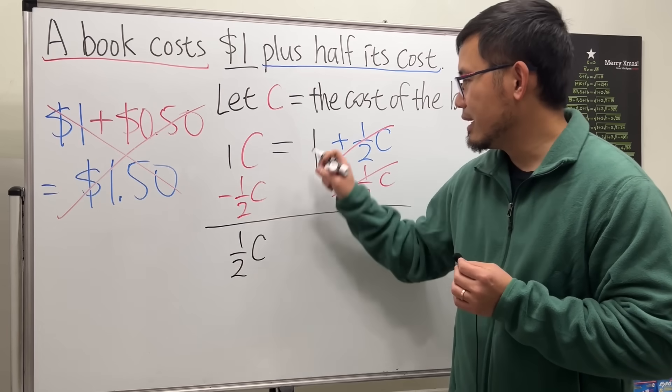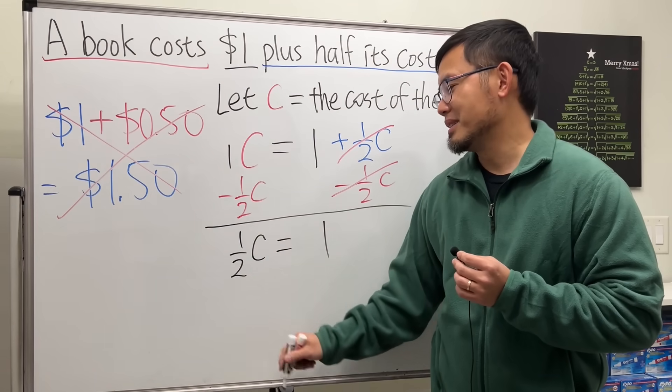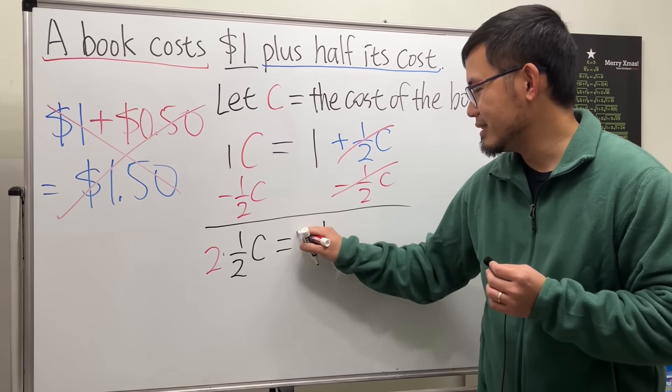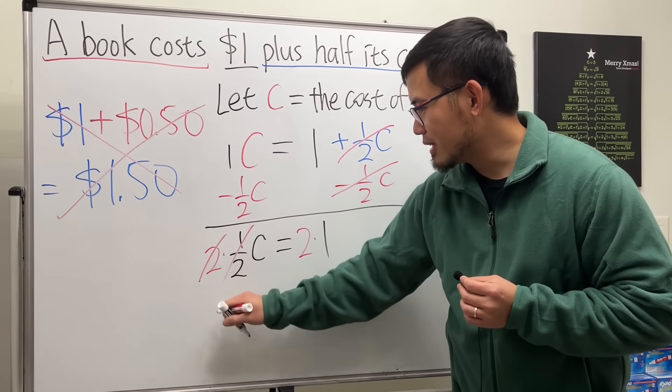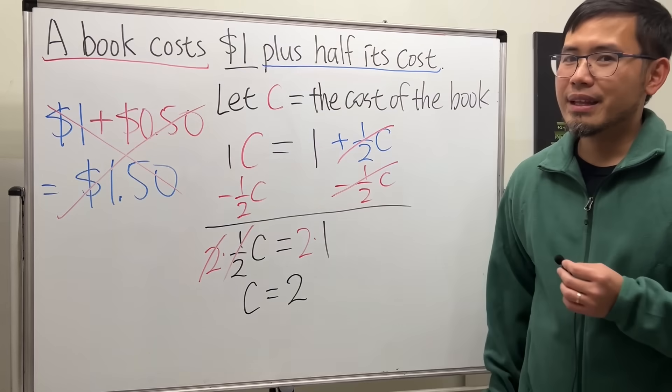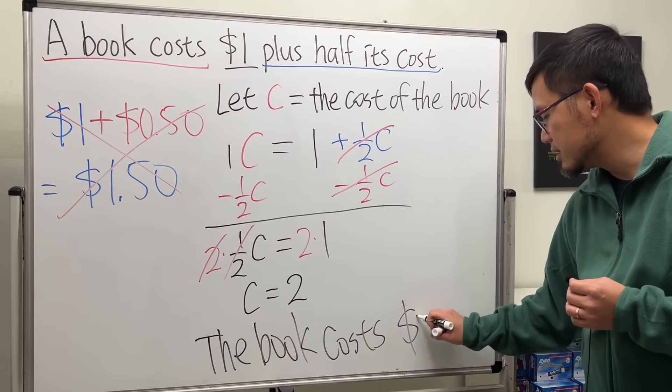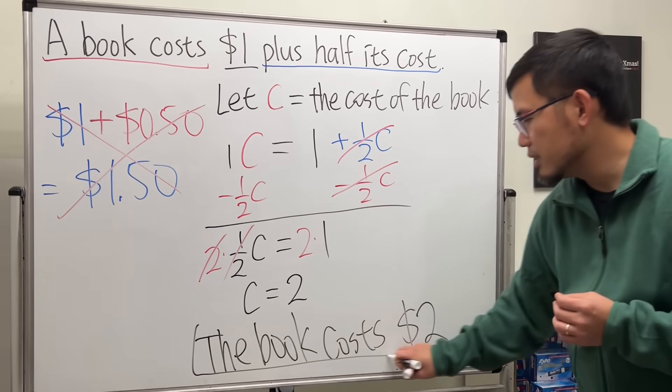And that's equal to 1. One-half times C is equal to 1. Multiply both sides by 2, so you can cancel, cancel, and C is equal to 2. Therefore, the book costs $2. This right here is the answer.